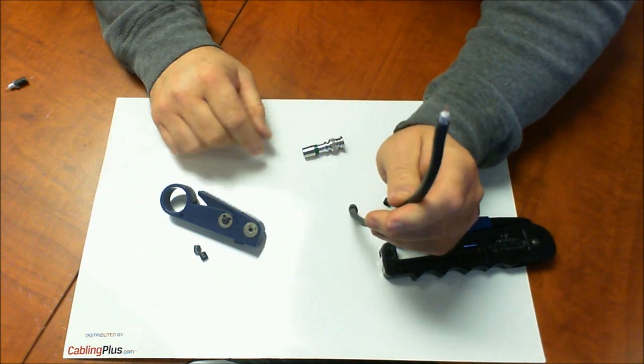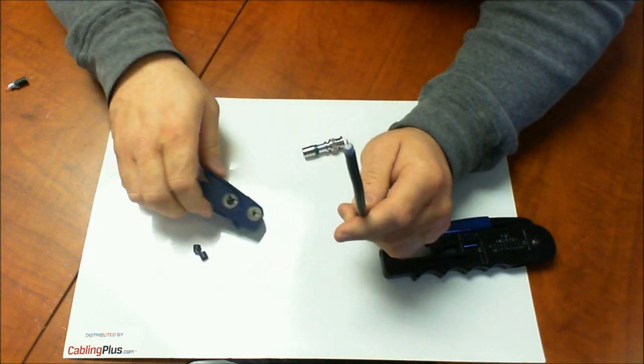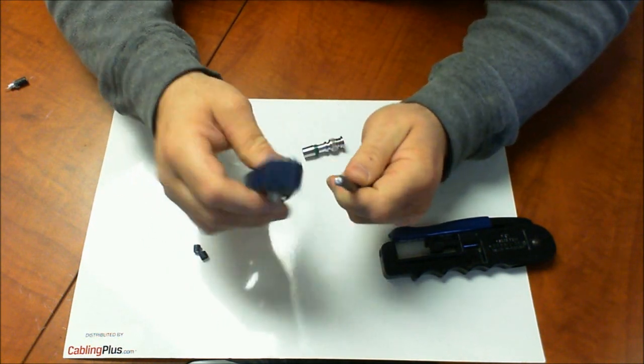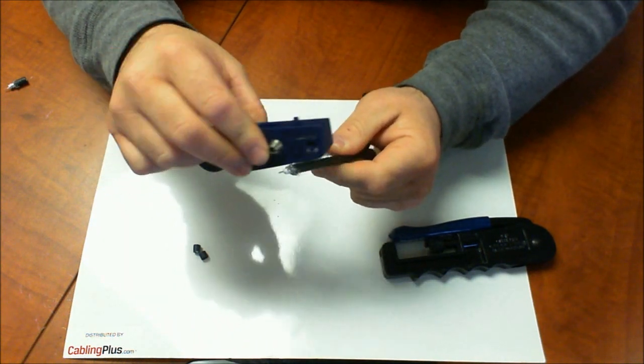Now I have the center conductor right there, and I have the braid and the shielding. So I'm going to use a little trick - I put a little Velcro on the end of my stripper, and that's going to let me just brush all the braid down.